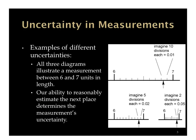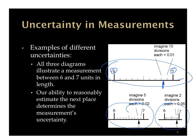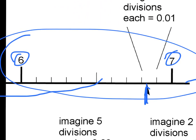Here are some examples of different rulers or measuring devices, and we're trying to take the measurement of this arrow. All three diagrams illustrate the same six to seven units. Our ability to estimate that last place is much better in the first one than in the second or third. If we zoom in, we can make little marks in between and tell it's probably around 6.83.